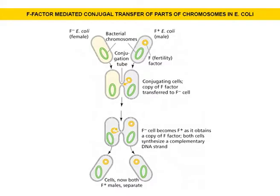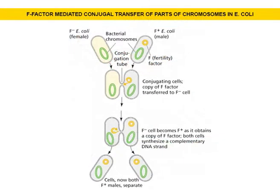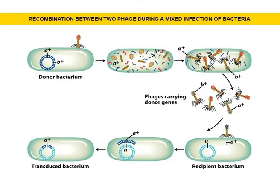Examples are recombination during F factor mediated conjugal transfer of parts of chromosomes in E. coli, and recombination between two phage during a mixed infection of bacteria. The nucleotide sequences are exchanged between two identical molecules of DNA in homologous recombination.